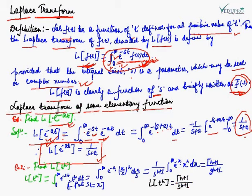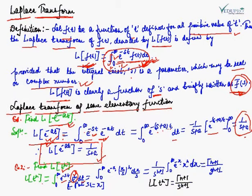Our next example is: we have to obtain the Laplace transform of t^n. Same process: L[t^n] = integral from 0 to infinity of e^(-st) F(t) dt. In place of F(t) we have t^n, so it becomes integral from 0 to infinity of e^(-st) t^n dt.